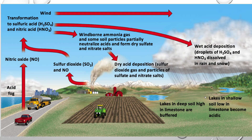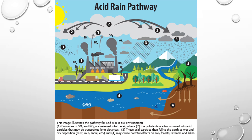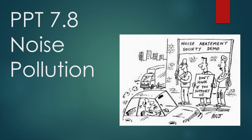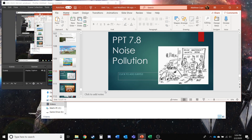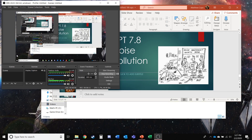Lakes with low limestone become acidic, while lakes with a lot of limestone become buffered and are no longer highly basic. This image shows more of the pathways of acid rain and how it can eventually cycle back into the atmosphere. That brings us to the end of our acid deposition section. Our last video will be all about noise pollution.